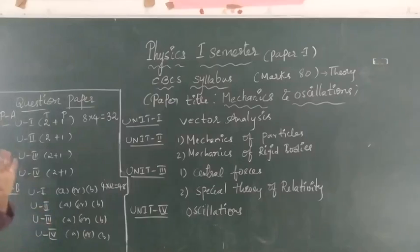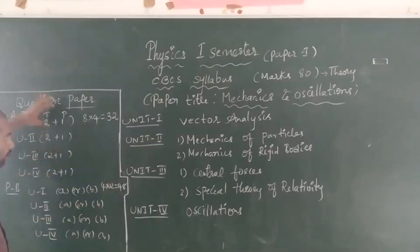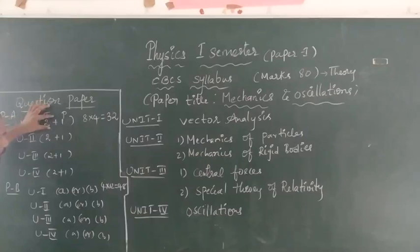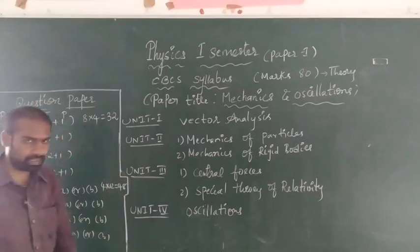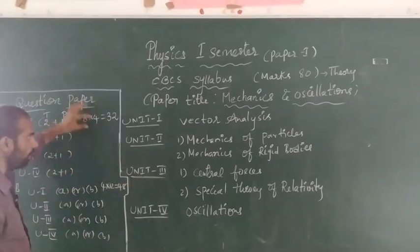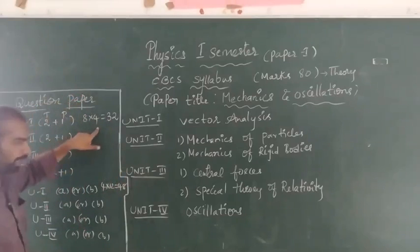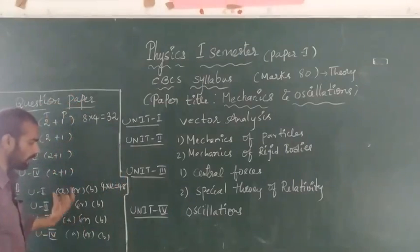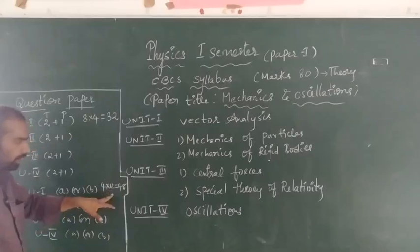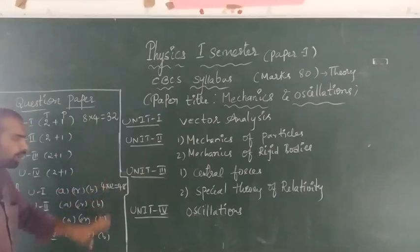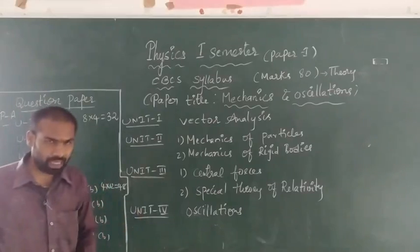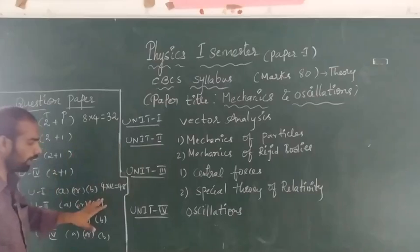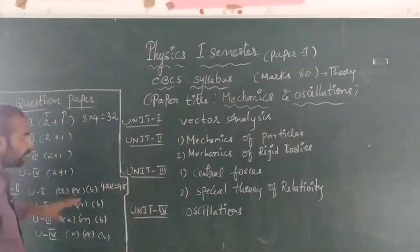In Part B, we have to attend four questions with internal choice, and 4 into 12 gives us the Part B marks. In Part A, each unit gives three questions, so three fours are twelve; from those twelve questions we have to attend only any eight. For each short-answer question there are four marks, while Part B has long-answer questions worth twelve marks each.